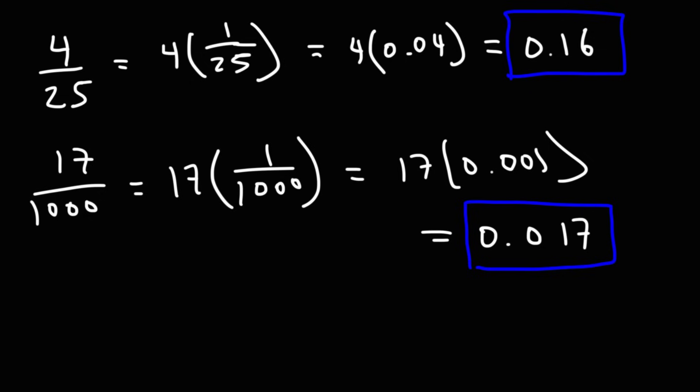So that's how you can quickly convert a fraction to a decimal without the use of a calculator or without using long division. A little memorization is required, but once you know those 5, 10 fractions that I gave you, maybe it was like 12 or 15, if you know those, you can easily quickly figure out the decimal value of other composite fractions.